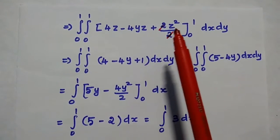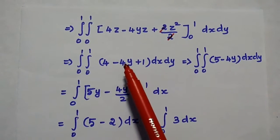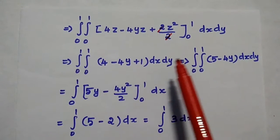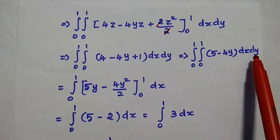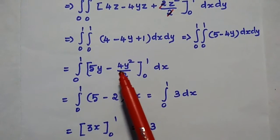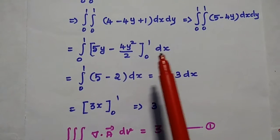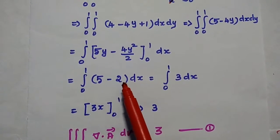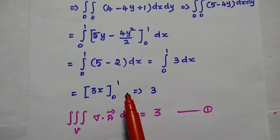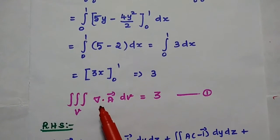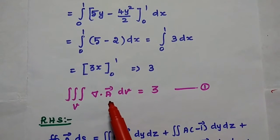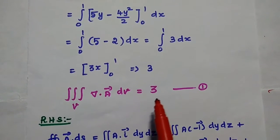Substituting the z-limits, with z=1 we get 4(1) − 4y(1) + 1² = 5 − 4y. Then integrating with respect to y gives 5y − 4y²/2 = 5y − 2y², evaluated from 0 to 1, which gives 5 − 2 = 3. Finally, integrating 3 with respect to x from 0 to 1 gives 3x = 3. So the left-hand side of the divergence theorem equals 3. Consider this the first equation.